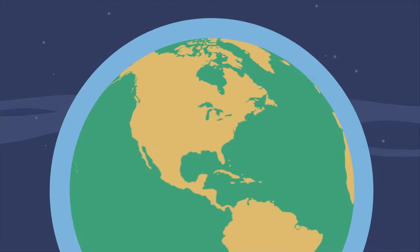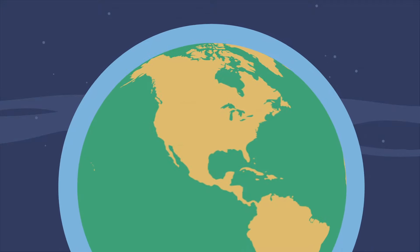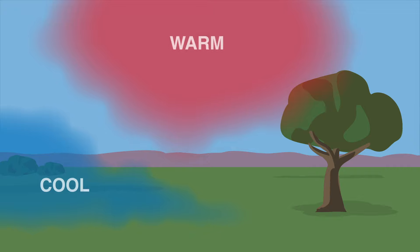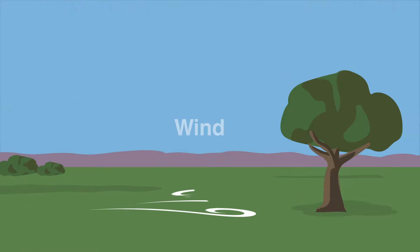The sun doesn't heat all of Earth equally, so there are high-pressure areas and low-pressure areas all over the planet. In general, air always flows from an area of high pressure to low pressure. So, cool air in high-pressure areas will rush into the low-pressure area created by rising warm air. This rushing air is called wind.